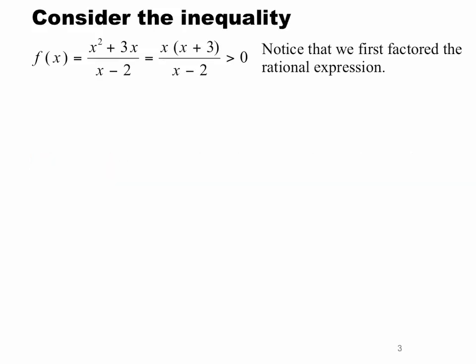So let's consider the inequality f of x equals x squared plus 3x divided by x minus 2 and determine when that's greater than 0. Notice if we're going to do this problem, the first thing you might want to do is factor the numerator and factor the denominator as well if necessary. So we end up with x times x plus 3 in the numerator and x minus 2 in the denominator.